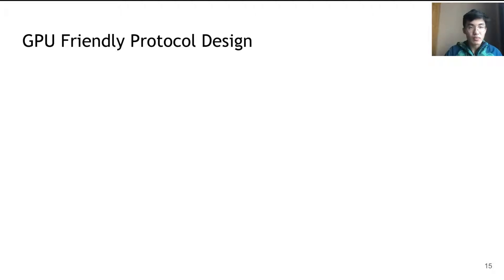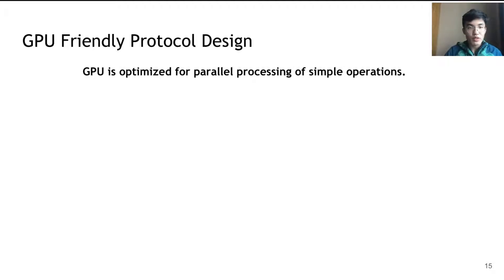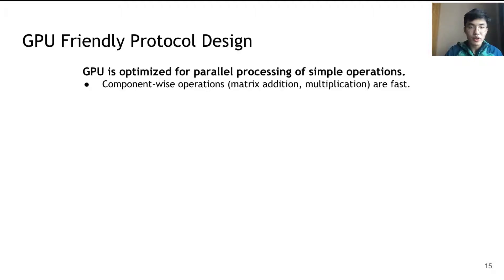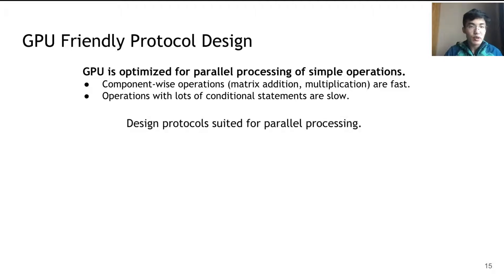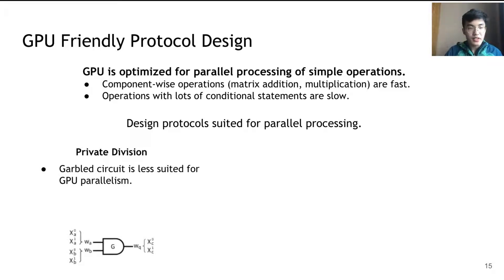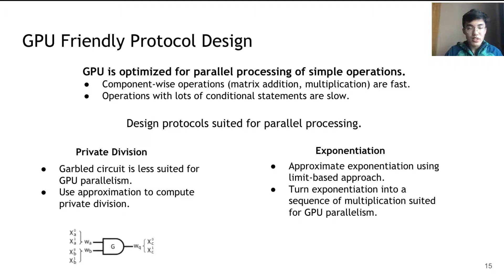Finally, we describe the principles of our GPU-friendly protocol design. GPU is optimized for parallel processing of simple operations. For example, component-wise operations such as matrix addition and multiplication are fast, whereas operations with lots of conditional statements are slow. Therefore, we design protocols suited for parallel processing. For private division, rather than using a Garbled circuit, which is less suited for GPU parallelism, we use an approximation-based method. Similarly, for exponentiation, we approximate it using a limit-based approach that turns exponentiation into a sequence of multiplications suited for GPU parallelism.